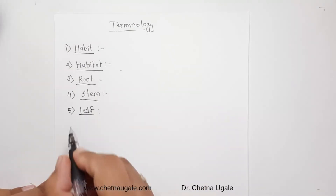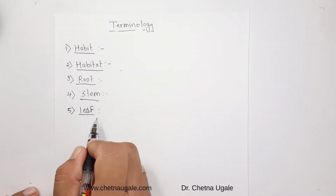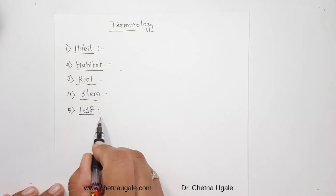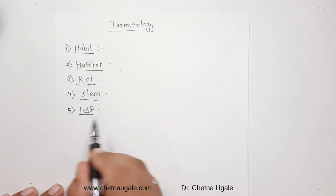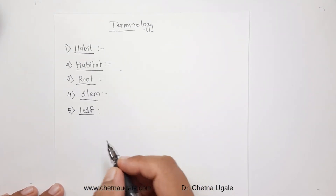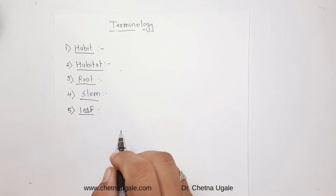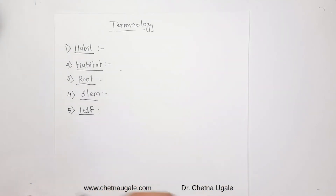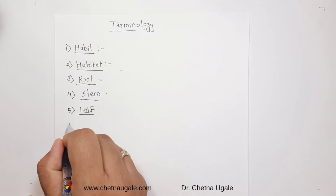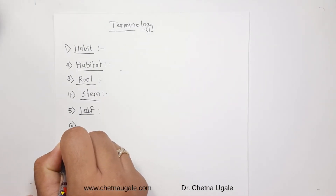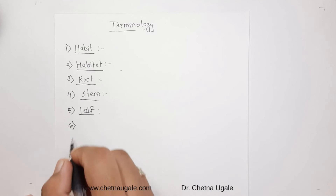The next terminology is leaf. The leaf is described firstly by its arrangement — that is phyllotaxy — then its type, shape, apex, margin, venation, and any modification if present.